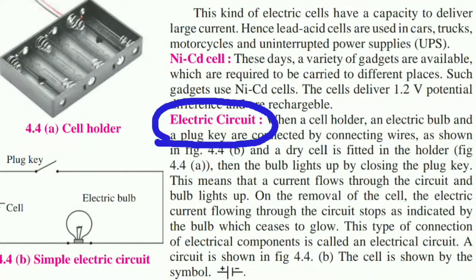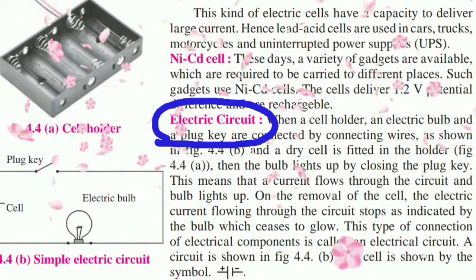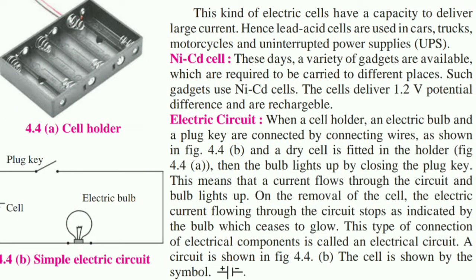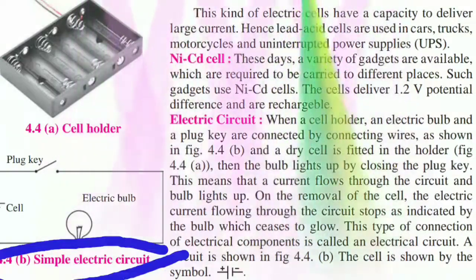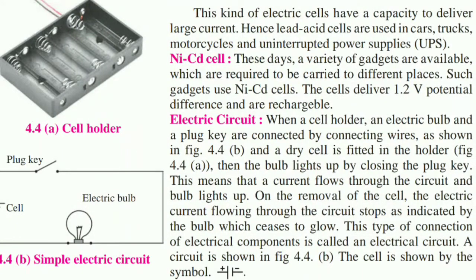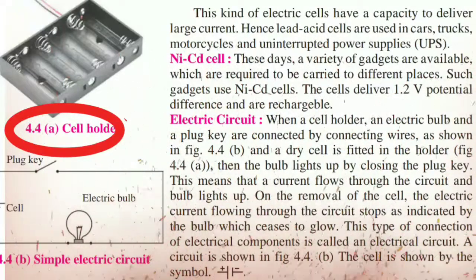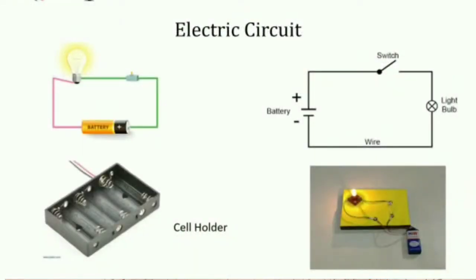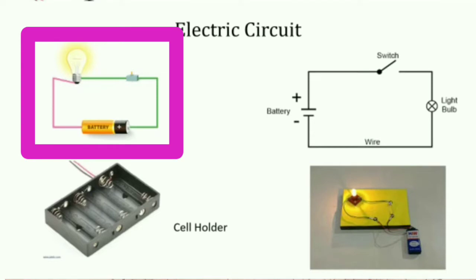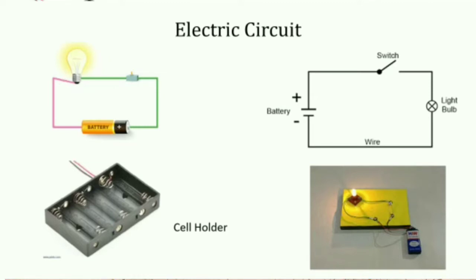Let us move towards electric circuit. Students, when a cell holder, an electric bulb and a plug key are connected by connecting wires as shown in the figure that is 4.4B and a dry cell is fitted in the holder that is figure 4.4A then the bulb lights up by closing the plug key. This means that a current flows through the circuit and bulb lights up. On the removal of the cell, the electric current flowing through the circuit stops as indicated by the bulb which ceases to glow.